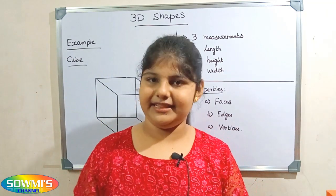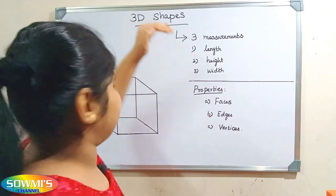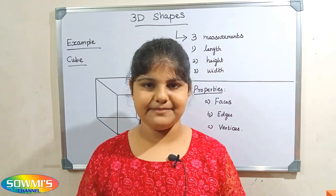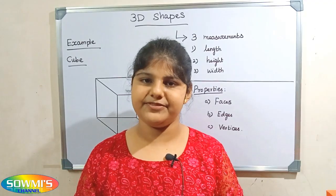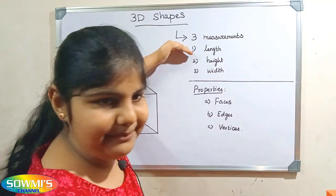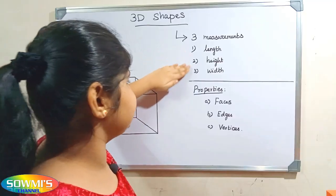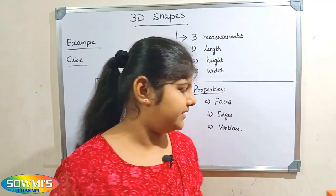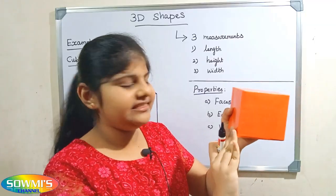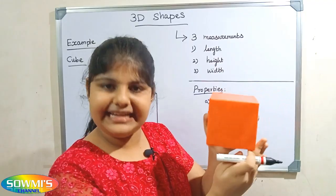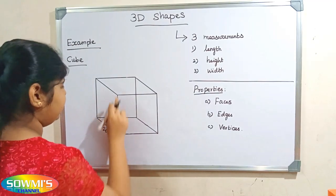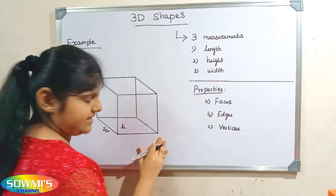Hi friends, welcome to Somsh channel. In this video we are going to see about 3D shapes. 3D shapes are also called as solid shapes. 3D stands for three dimensional. The shapes which are measured in three directions are called as three dimensional shapes. 3D shapes have three measurements such as length, height and width. For example, we can take a cube. It has width, height and length.